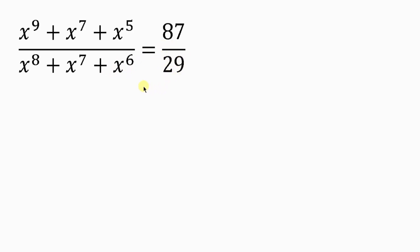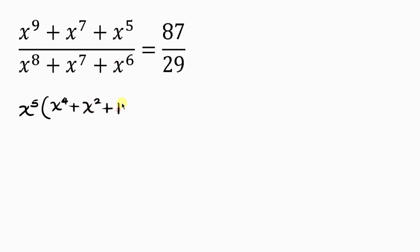Our first step towards solving this question is to factorize the numerator and also factorize the denominator. Factorizing the numerator, notice that x to the power of 5 is common, so let's factor that out. Bringing it out, we're going to have x to the power of 4 plus x to the power of 2 plus 1.